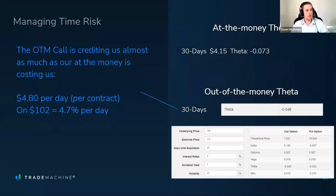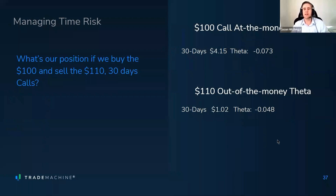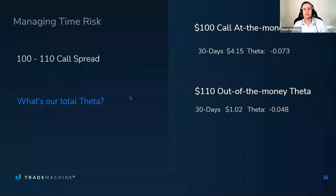That tells you something about offsetting the cost to hold this thing. The simplest thing is to just own the bull call spread — buy the 100 call, sell the 110 call, 30 days out. Now we can look at the net cost: the long position is costing us $7.30, but we're gaining back $4.80 from the position we're short. Combined, the overall position costs about $2.50 per day per contract — substantially less than the naked call.